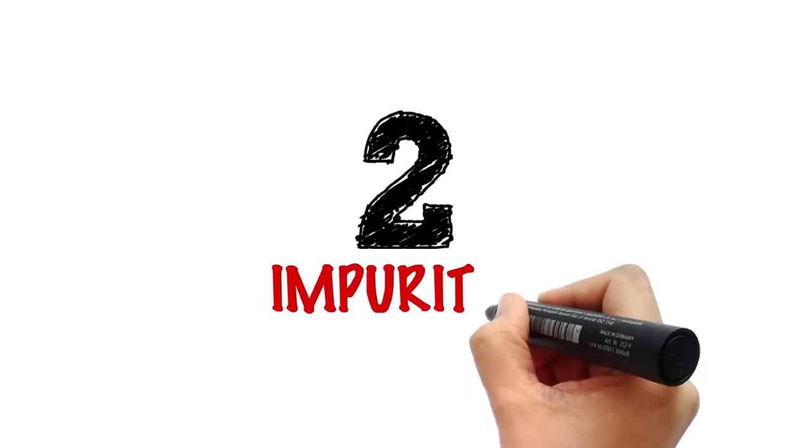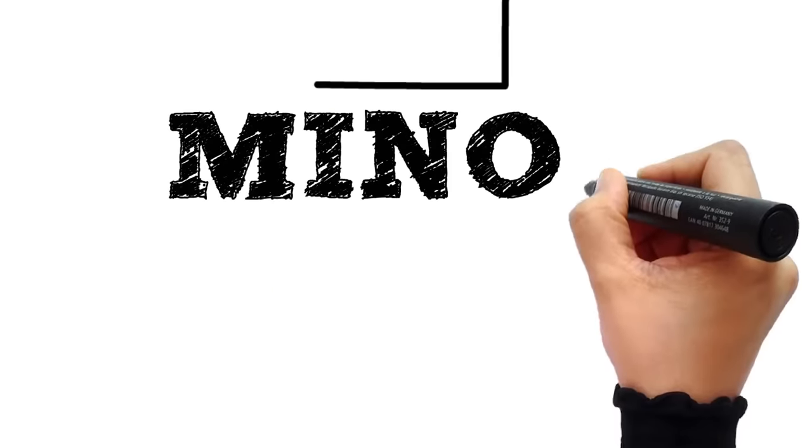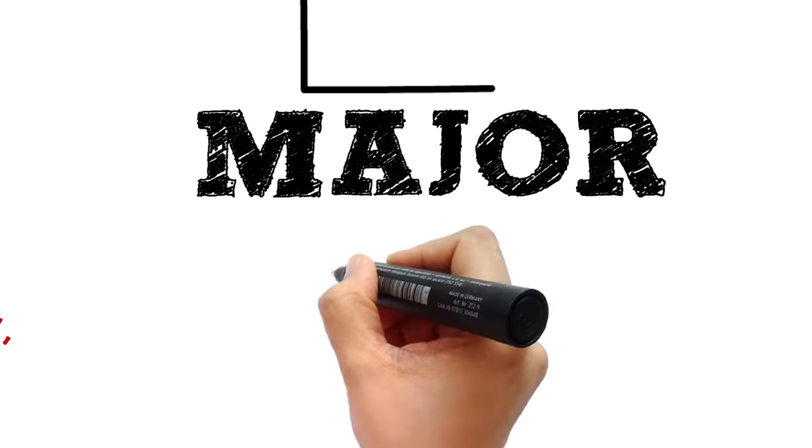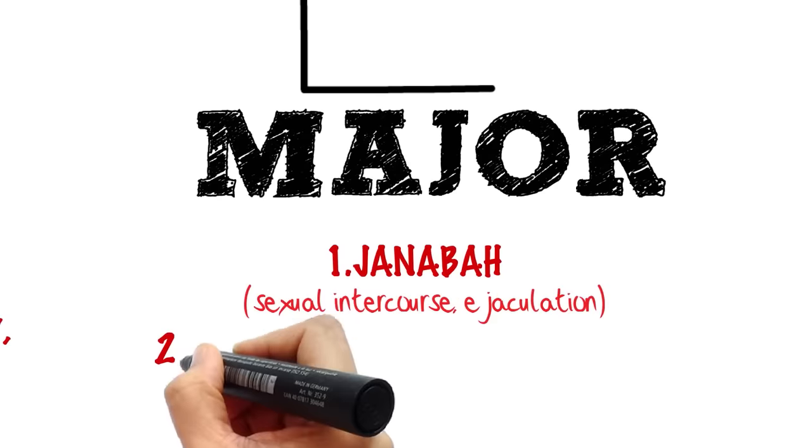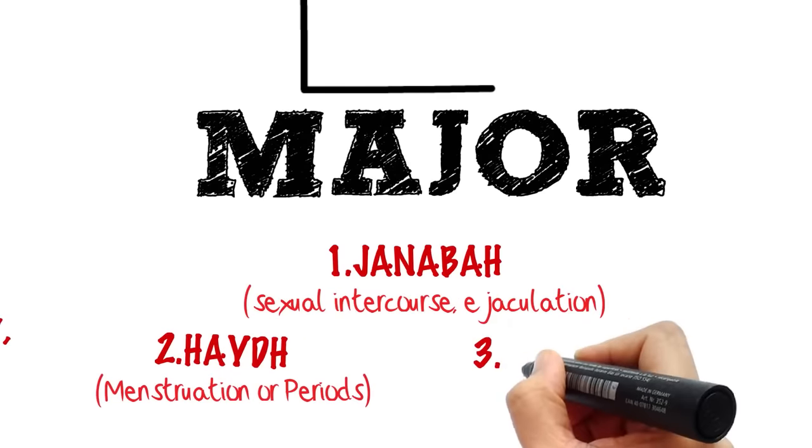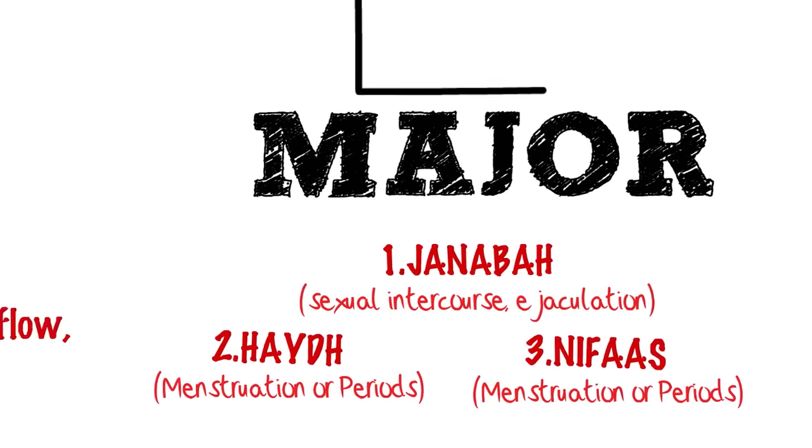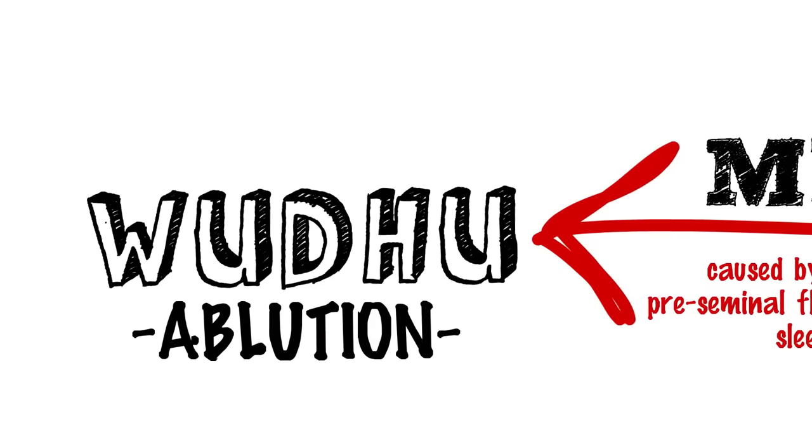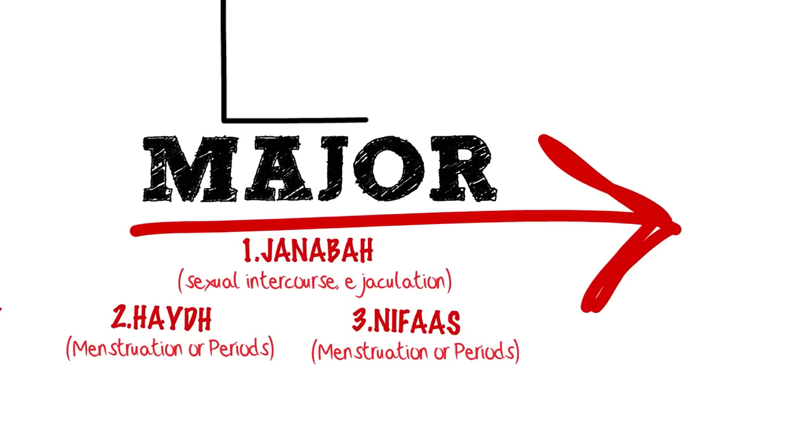So let's begin. There are two kinds of ritual impurities: the minor impurity and the major impurity, which occurs as a result of Janabah, Haid, or Nifas. To achieve Tahara from the minor impurity, you only need to renew your Wudhu.